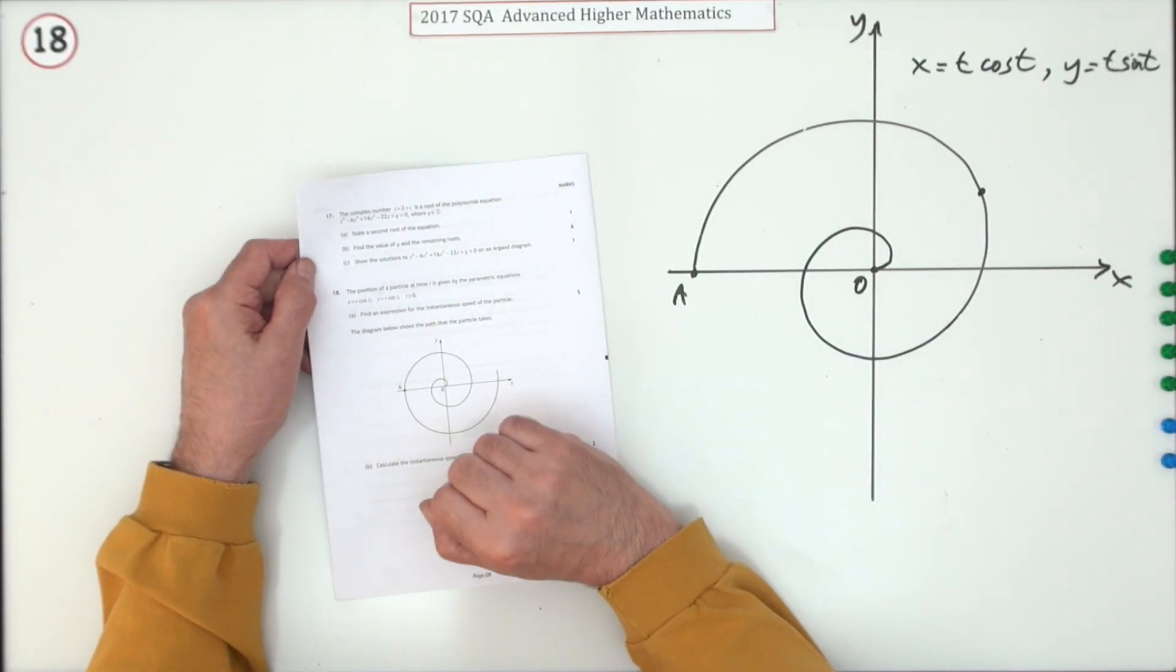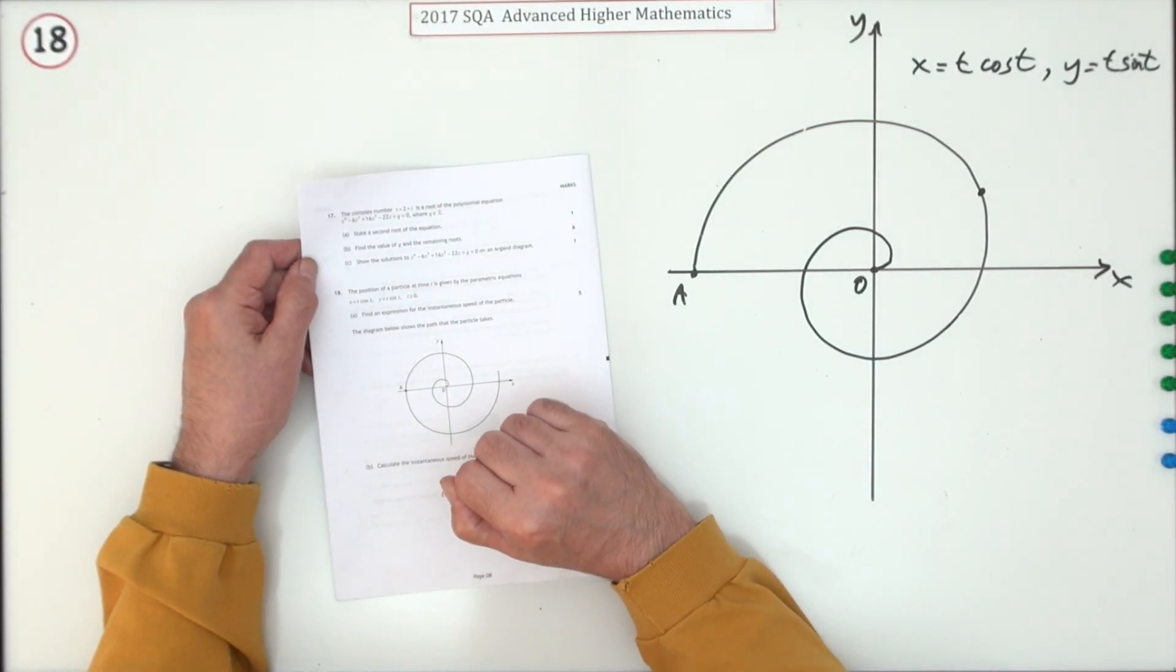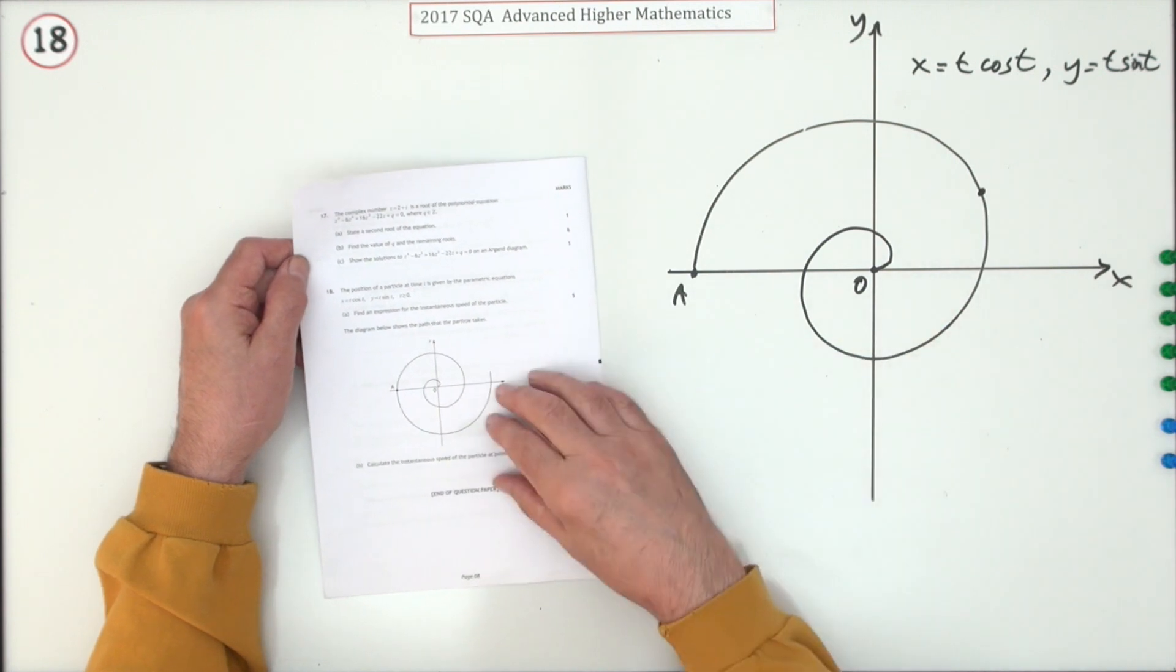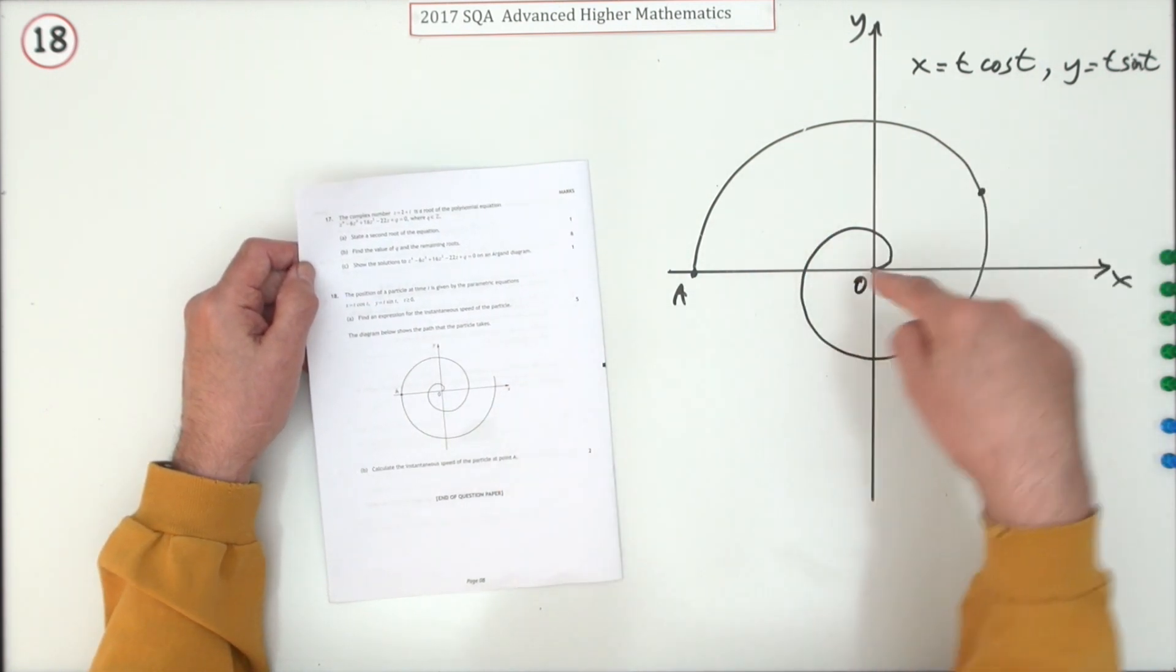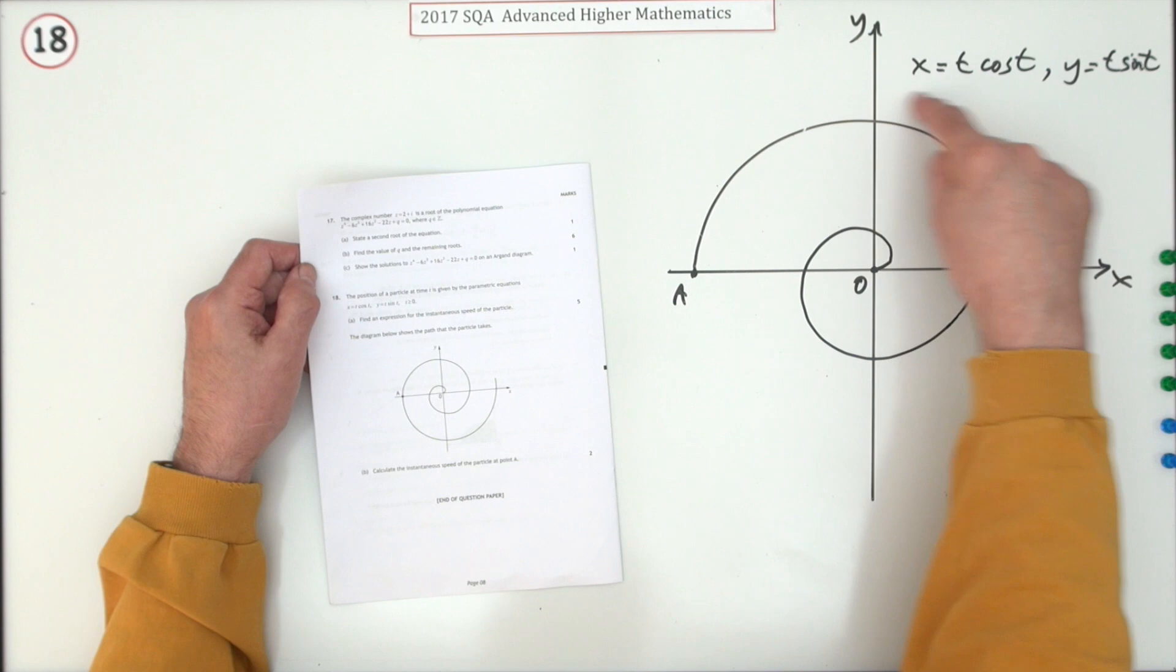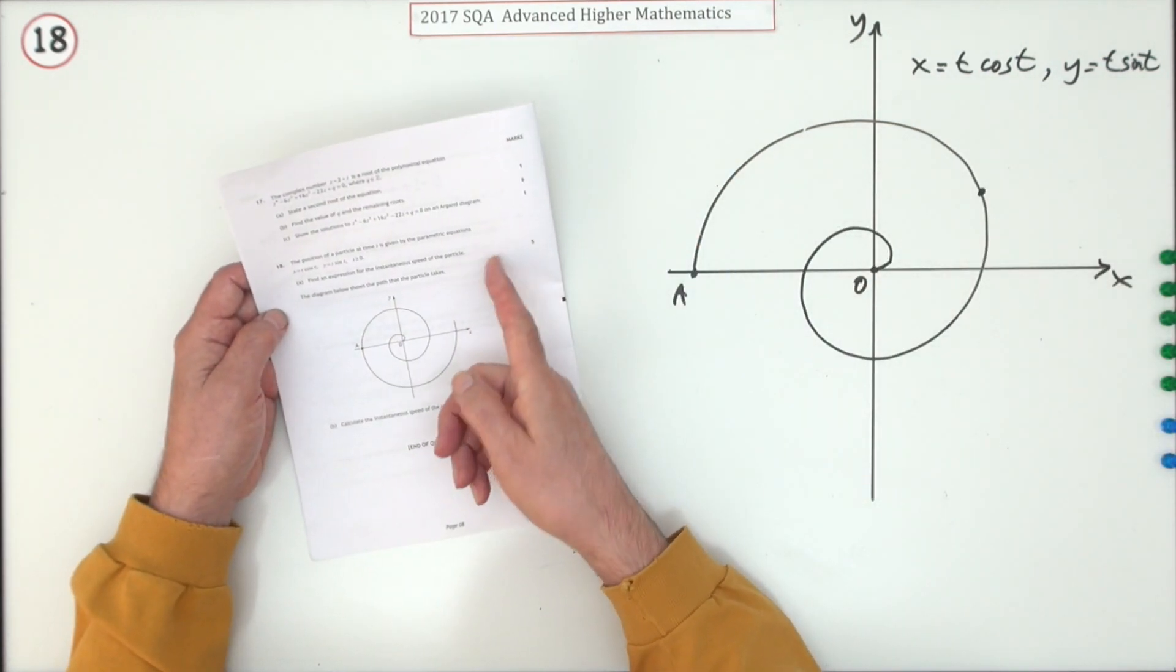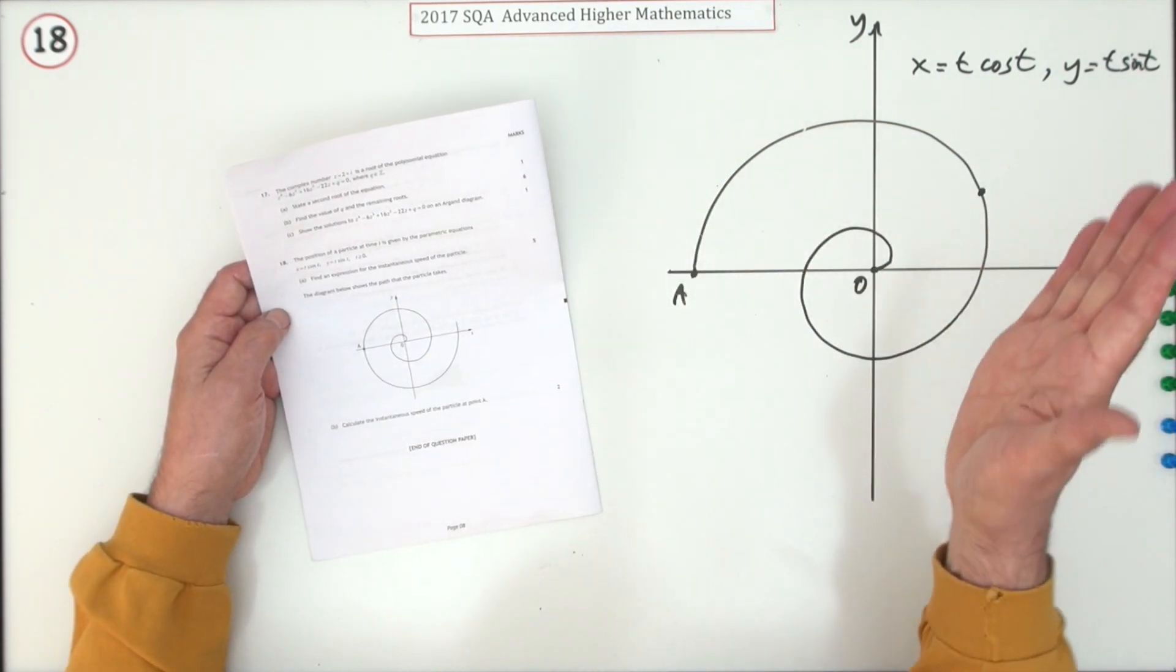Number 18, the last question in the 2017 Advanced Higher Maths. Seven marks here for parametric equations. You've got the spiral defined by these parametric equations, but what it's actually asking for is not what you might expect—the gradient at a point on it.